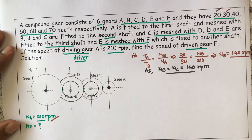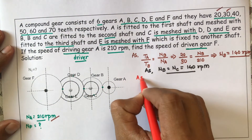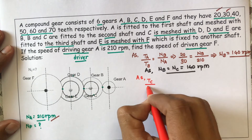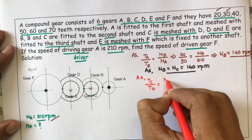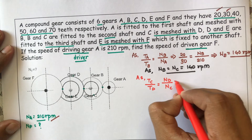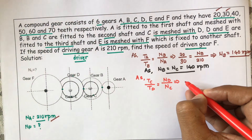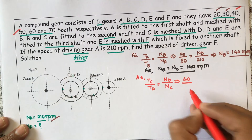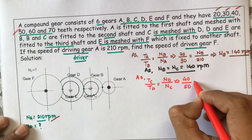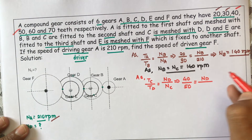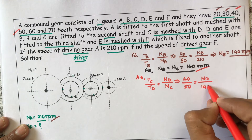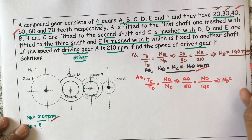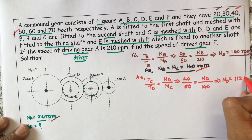Next, since C is meshed with gear D, we write TC / TD = ND / NC. Putting in the values: TC is 40, TD is 50, and NC is 140 RPM. Therefore, ND = 112 RPM.